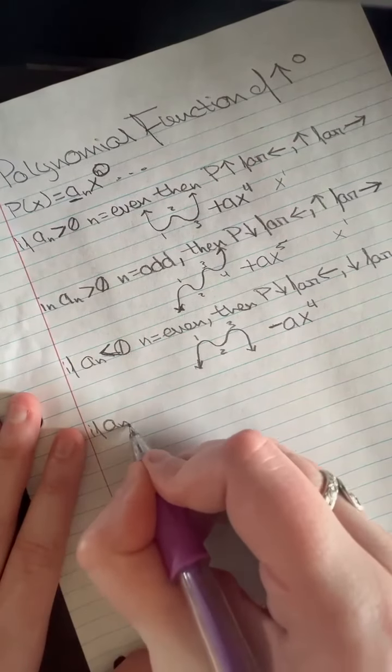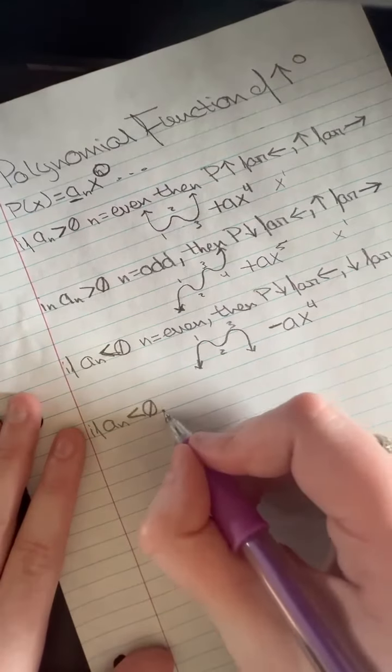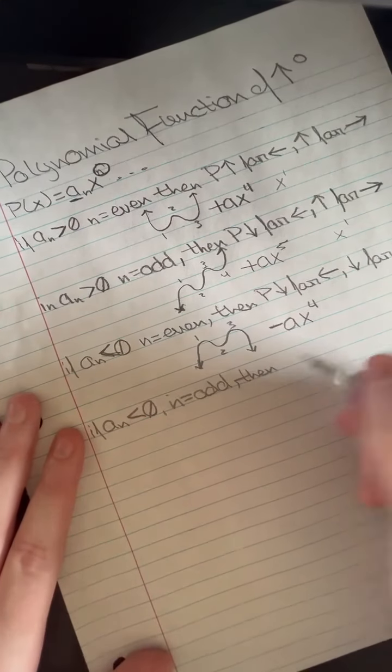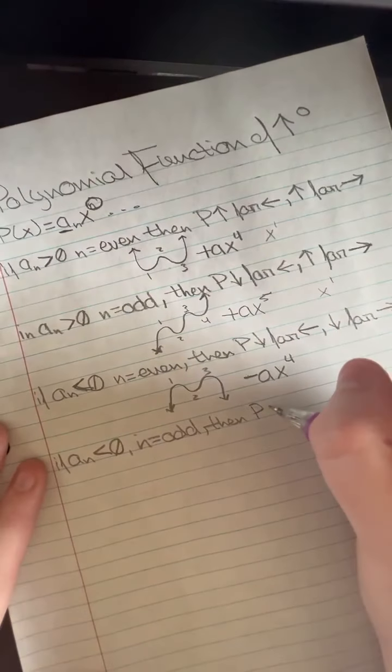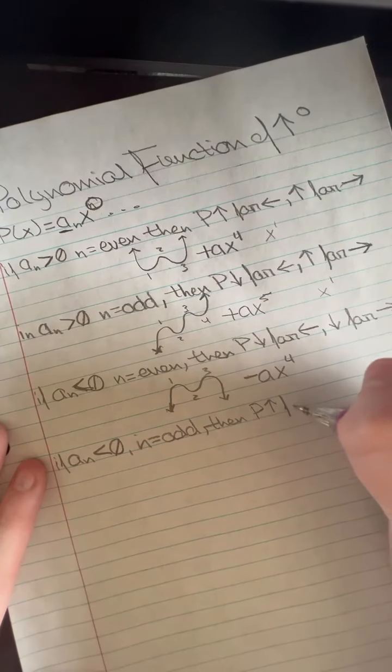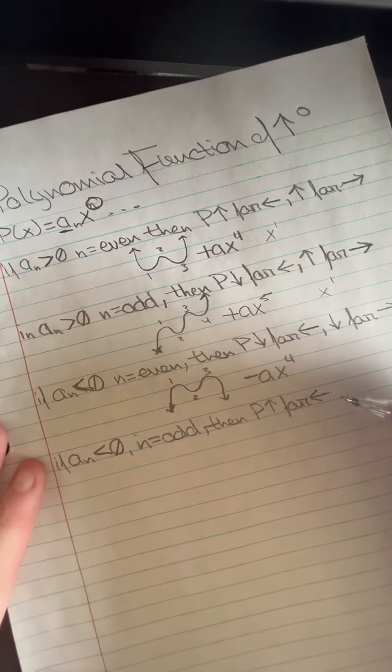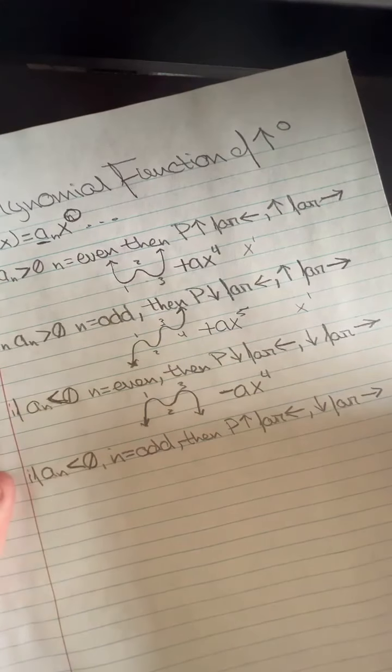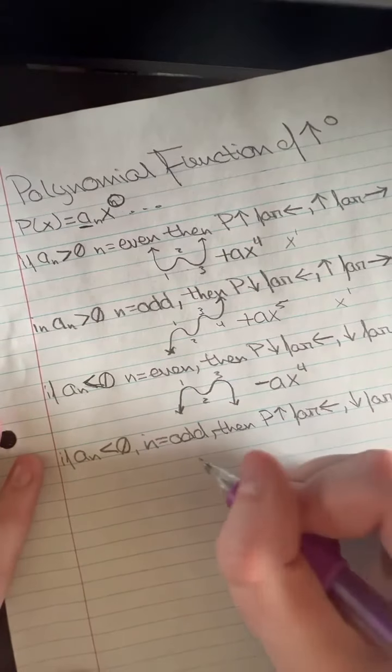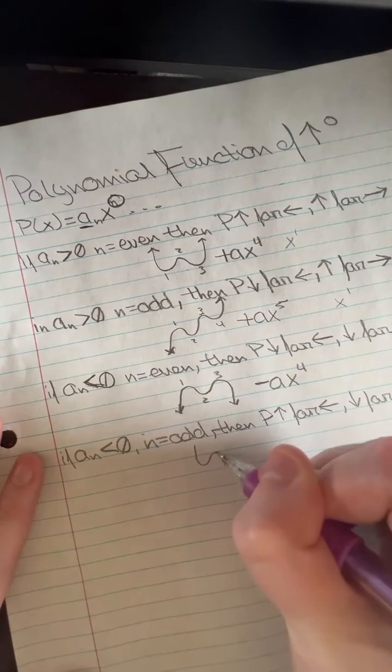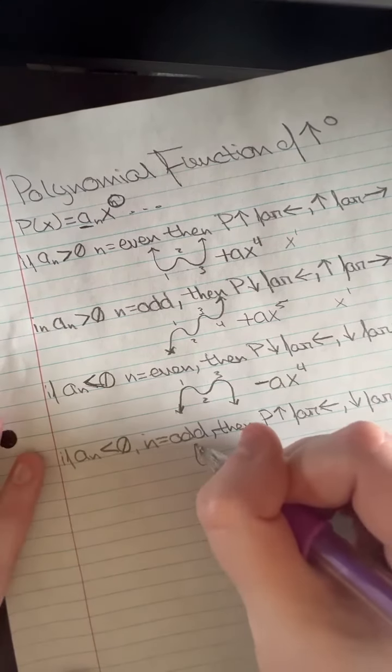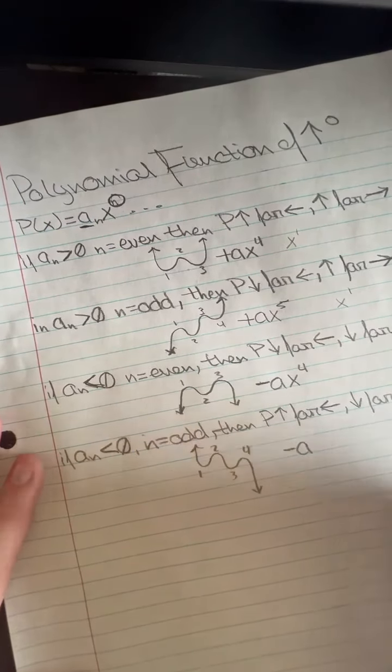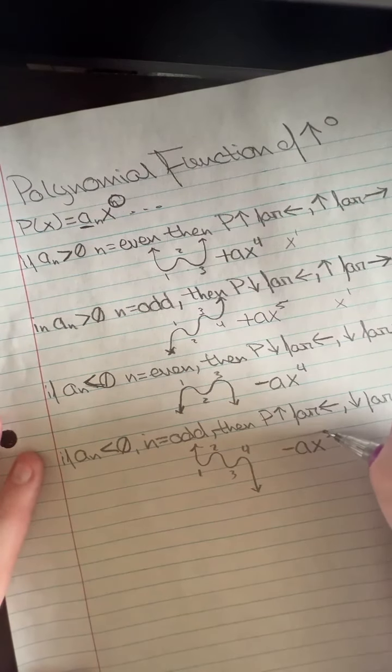Lastly, if a is still less than 0 but n is an odd number, then p would go up far left, down far right, which would look the opposite of this one. So it would be up far left, down far right. 1, 2, 3, 4 turns. We would have a negative a since it is less than 0, and our exponent is odd, so it would be 5.